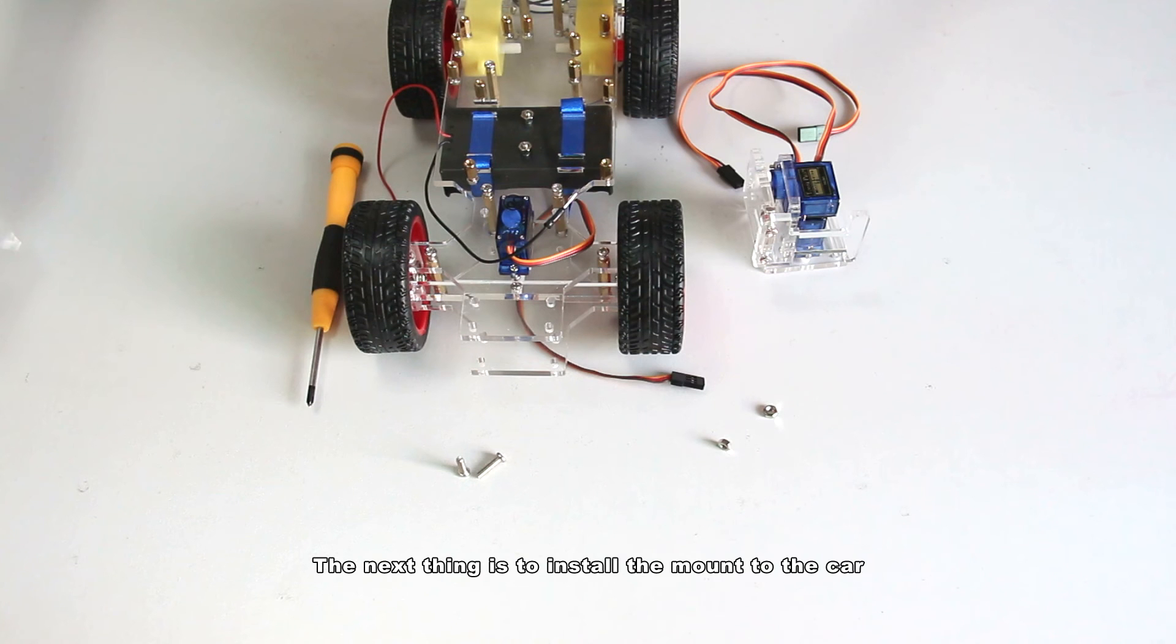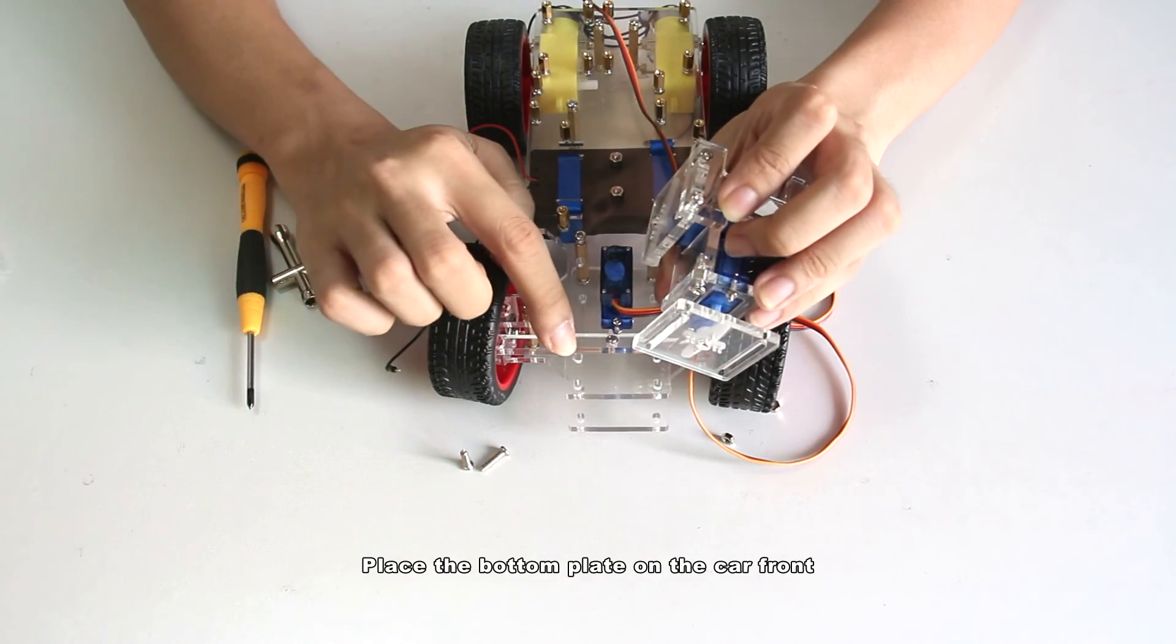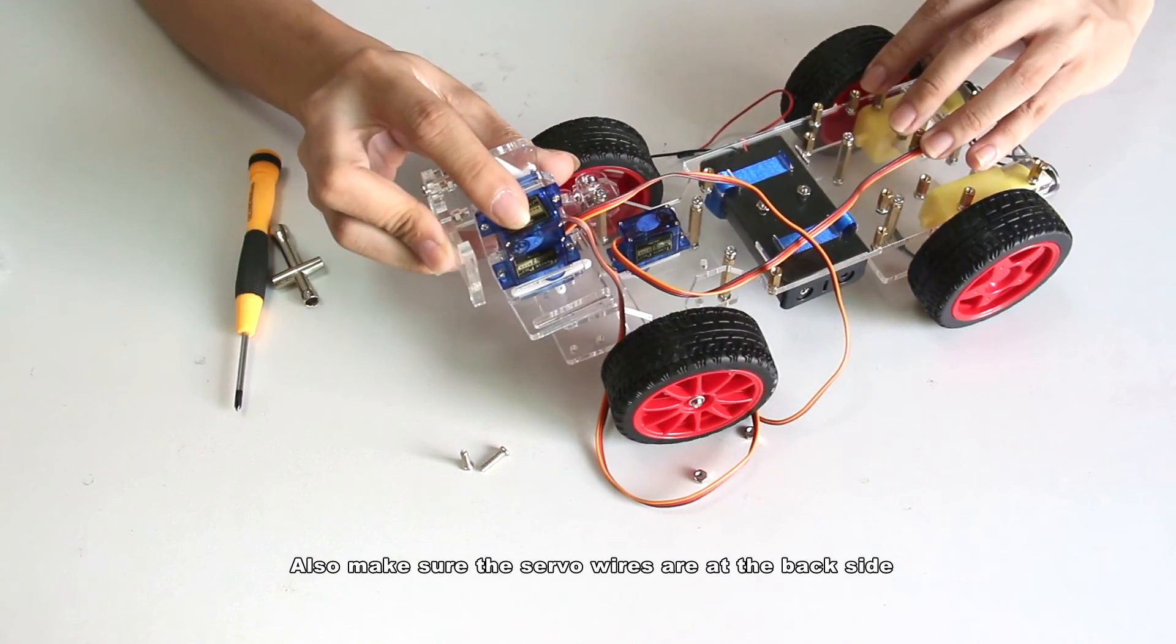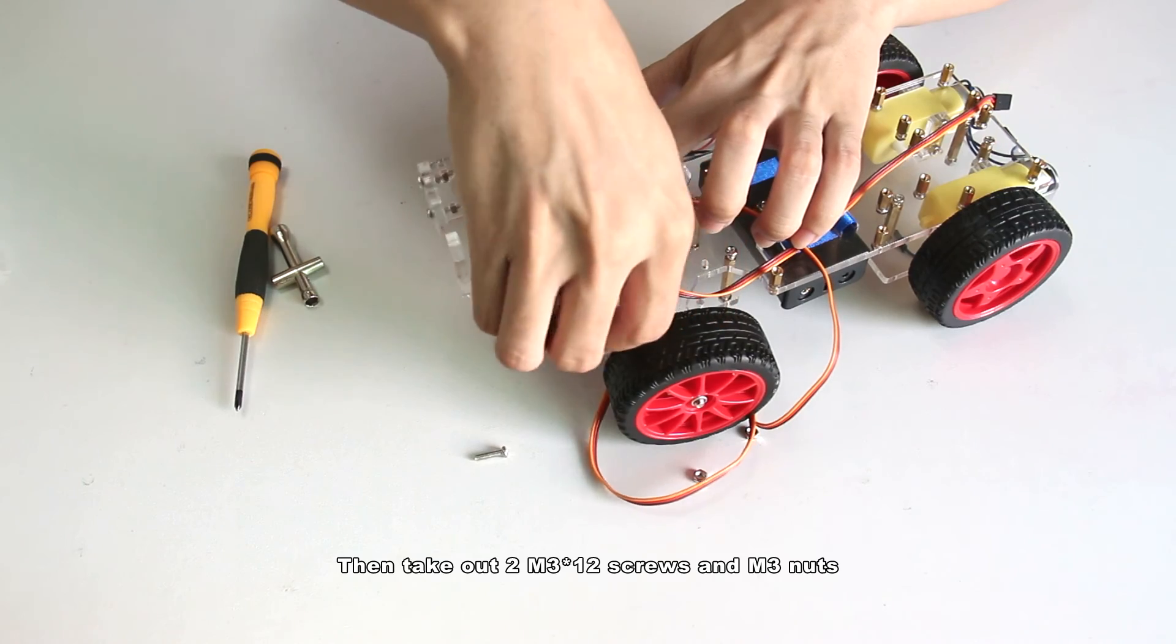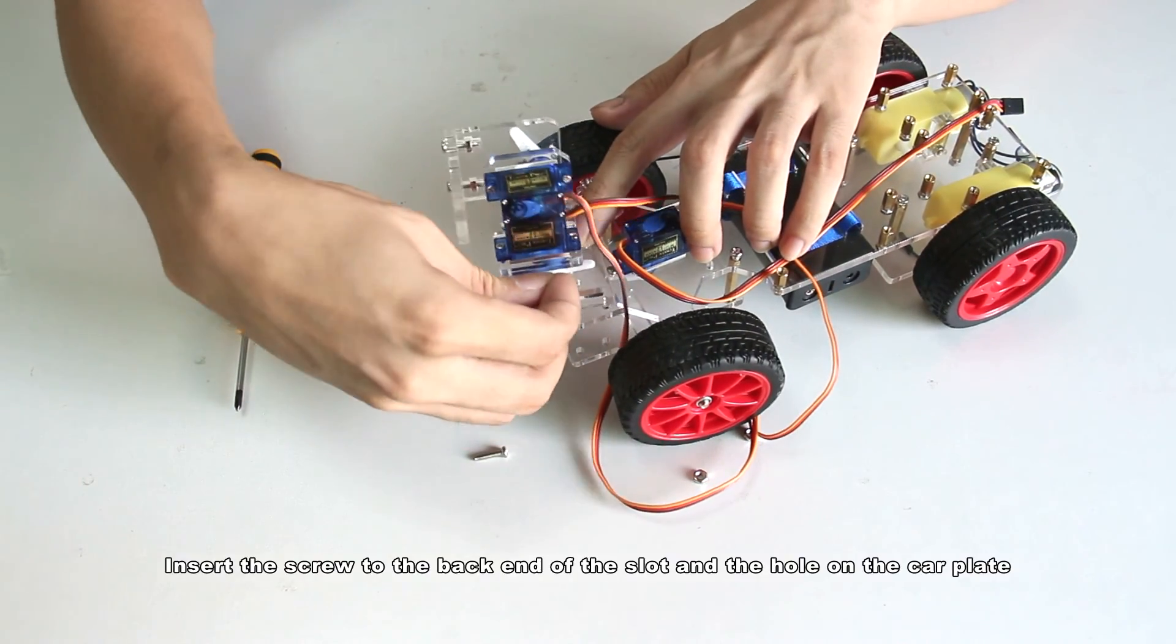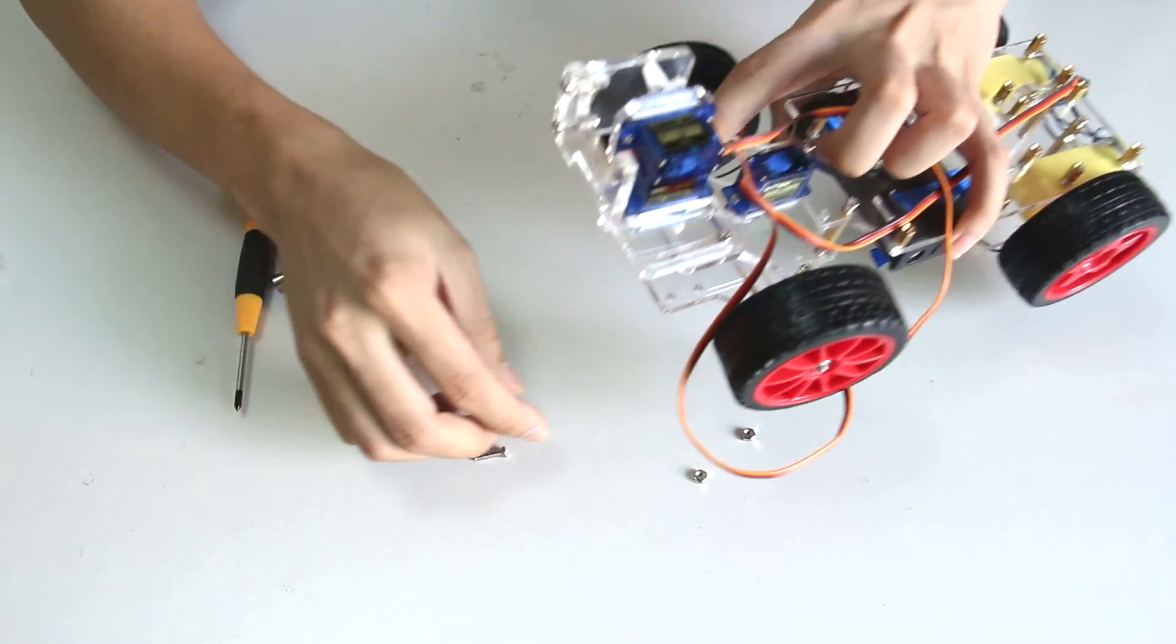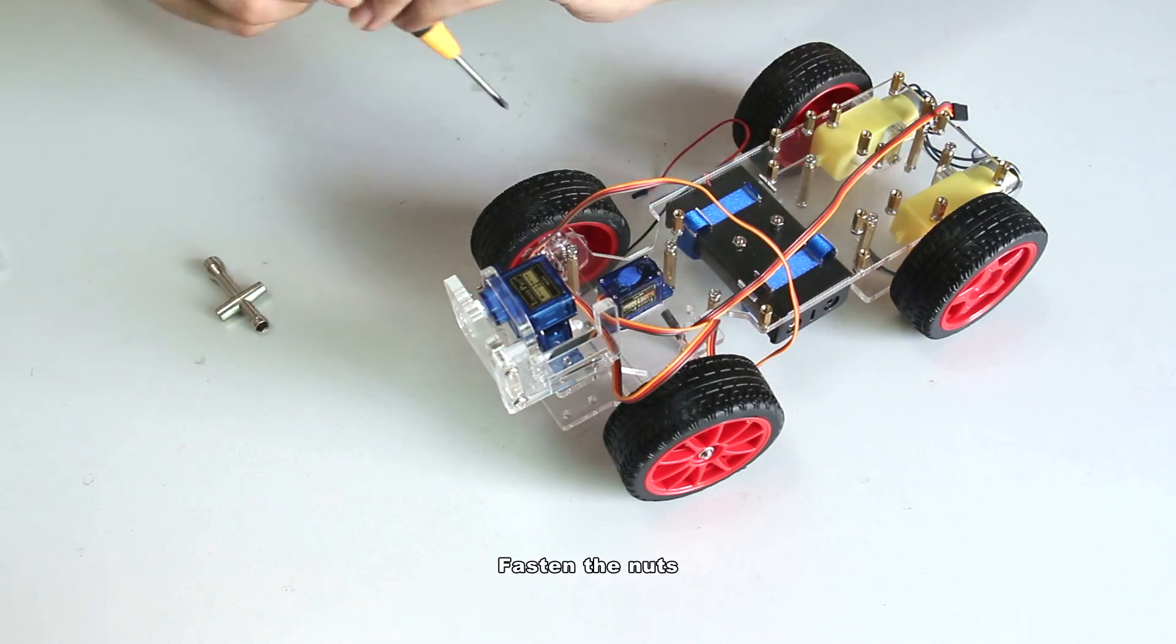The next thing is to install the mount to the car. Place the bottom plate on the car front. Align the two holes on the car plate with the slots on the mount plate. Also make sure the servo wires are at the back side. Then take out two M3 by 12 screws and M3 nuts. Insert the screw to the back end of the slot and hold on the car plate. Fasten the nuts.